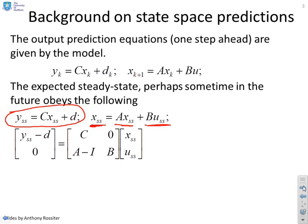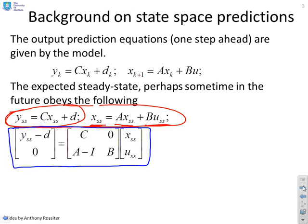If you take these two equations together, then what you find is you get a consistency equation, which is I've just put this blue line around it. So y_ss minus d over 0 equals a matrix C, 0, A minus I, B times a vector x_ss, u_ss. So we have consistency requirement between the steady-state input, steady-state state, steady-state output, and the disturbance.